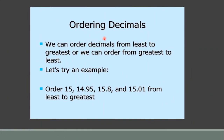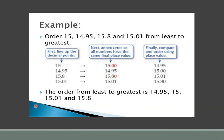Next: ordering decimals. We can order decimals from least to greatest, or from greatest to least. Let's try an example — how to arrange them from least to greatest. The example: order 15, 14.95, 15.8, and 15.01 from least to greatest.